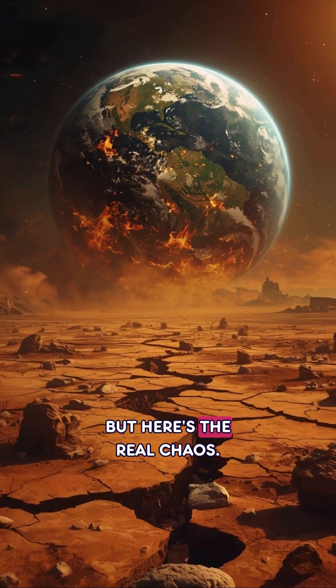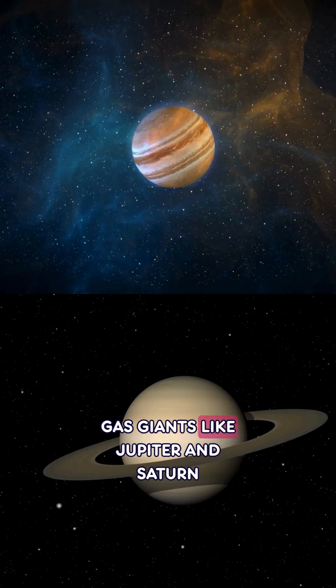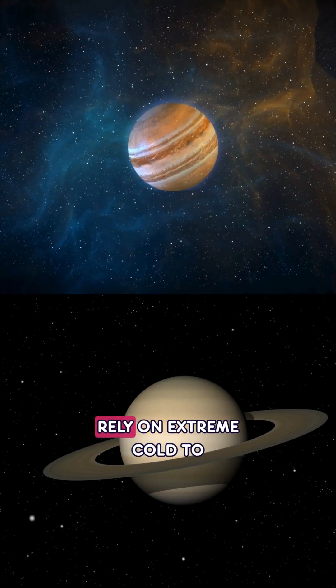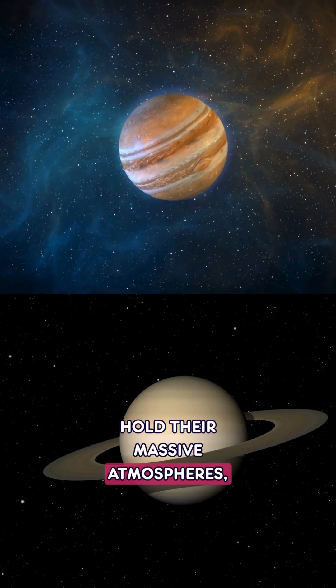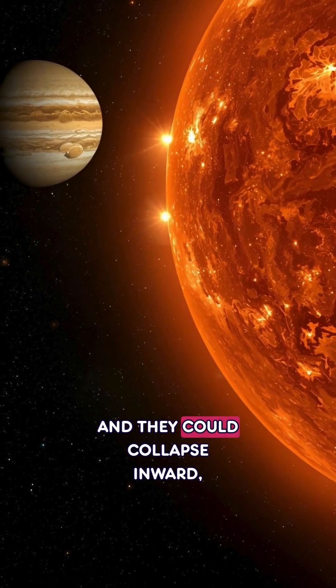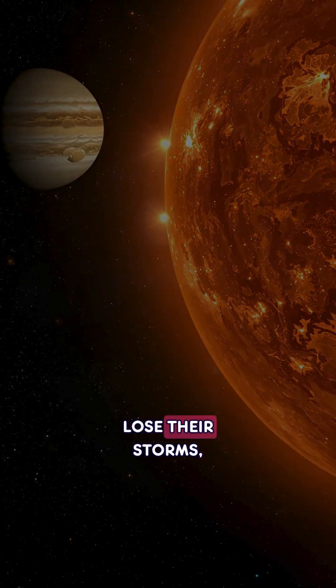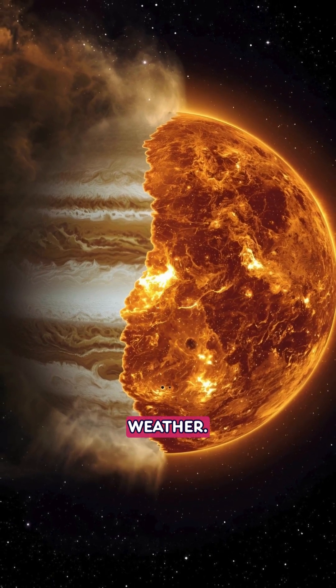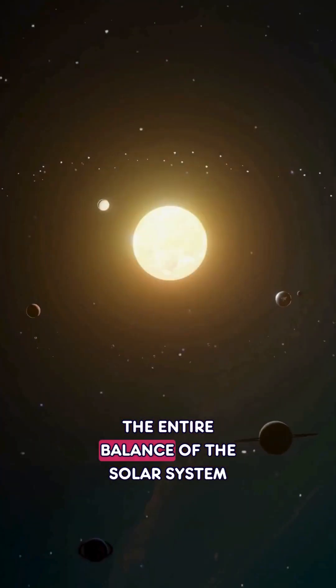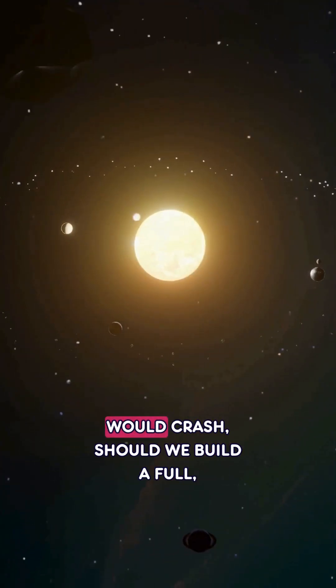But here's the real chaos. Gas giants like Jupiter and Saturn rely on extreme cold to hold their massive atmospheres. Move them closer and they could collapse inward, lose their storms, and erupt with totally unpredictable weather. The entire balance of the solar system would crack.